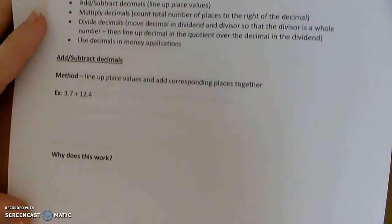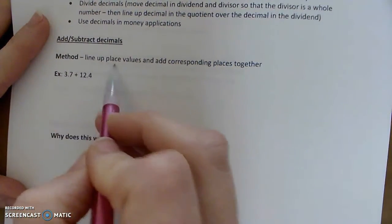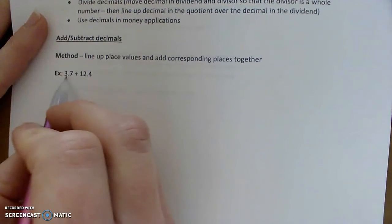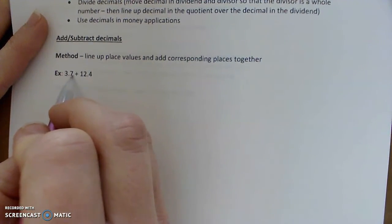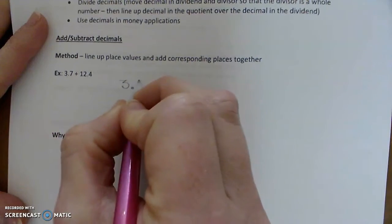So first let's talk about adding and subtracting. The method is to line up the place values and add the corresponding places together. So for example, 3.7 plus 12.4 will look like this, 3.7.